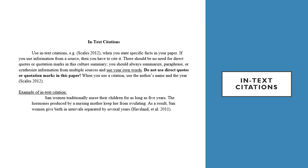Normally the in-text citation will be at the end of the sentence where you state your fact. At the bottom of this example we have a real example of information cited from a real source — the author was Haviland, the first author listed, but there are many authors. If you have a citation for a source with more than two authors, you will write the name of the first author listed and then 'et al.' and then the year. Note that in these in-text citations there is no title, no website link, and no page number.